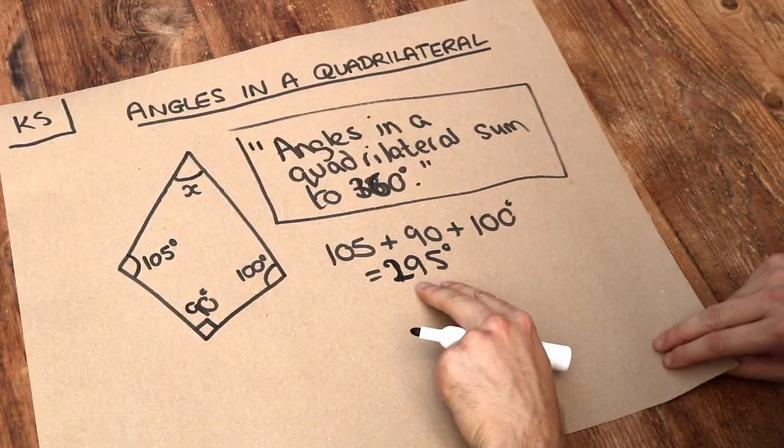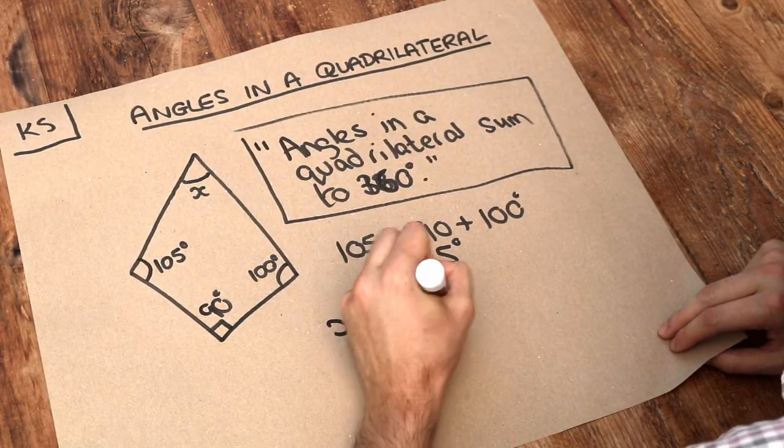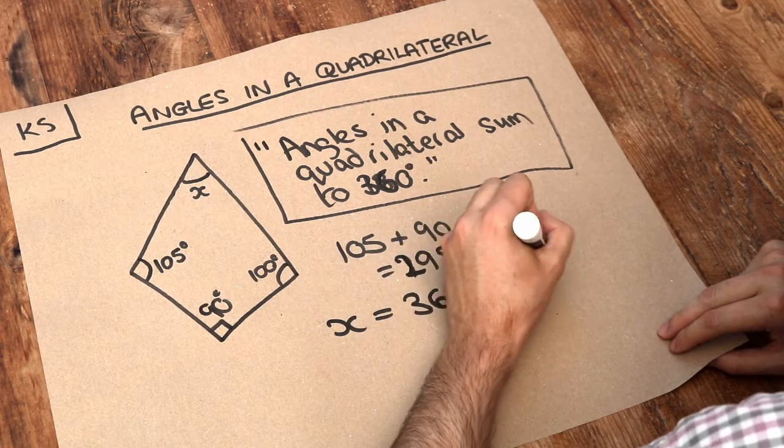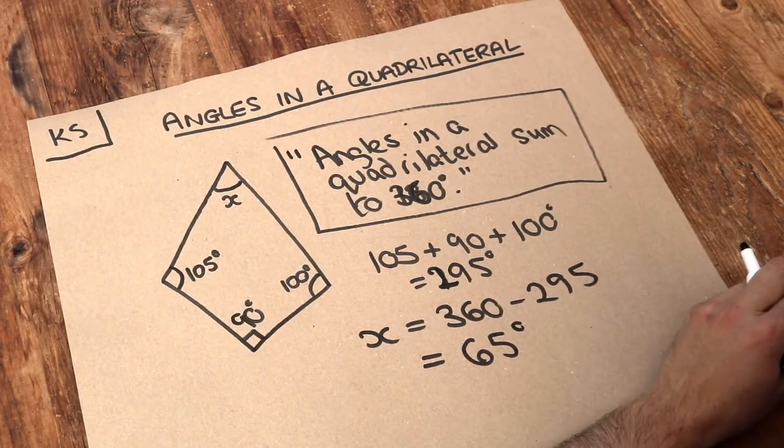Then we just need to subtract that from 360 to see what's left. So X is equal to 360 minus 295, and that's going to be 65 degrees. And that is the final answer.